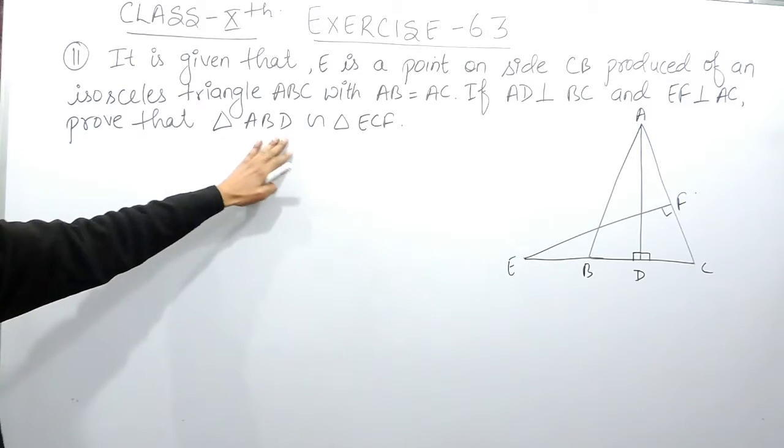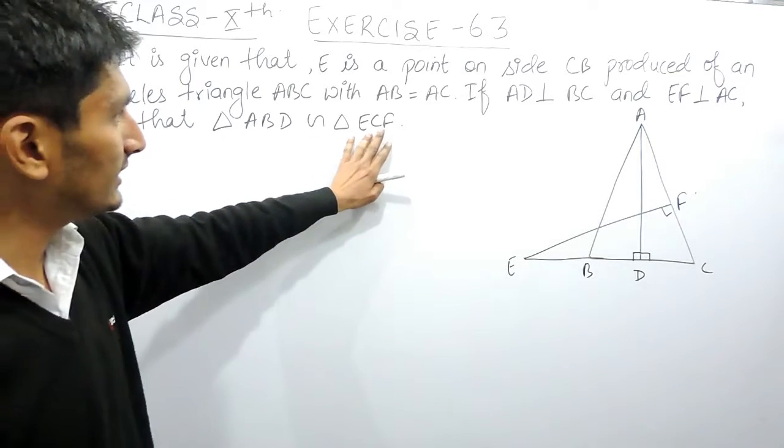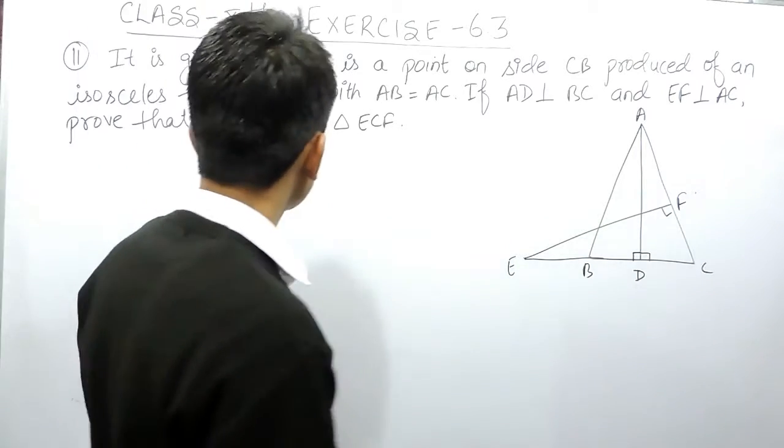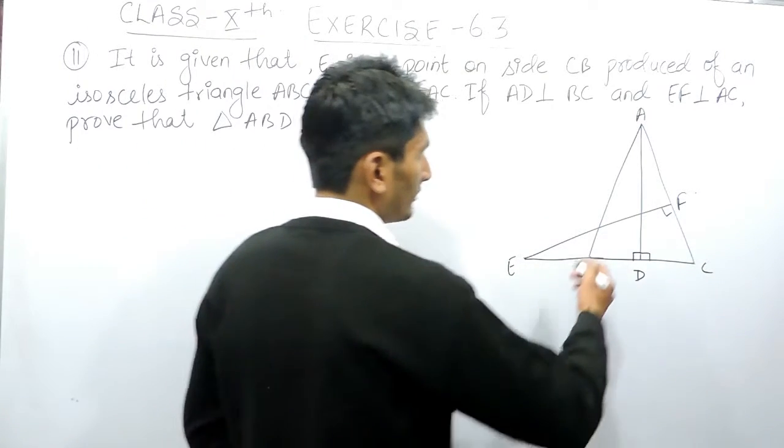Now this is given to you that triangle ABC is isosceles, which means this side AC is given equal to this side AB.